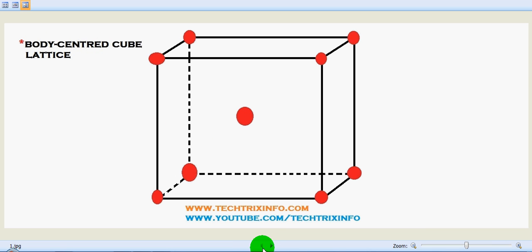So let's see what is a space lattice all about. Space lattice is actually a three dimensional geometrical arrangement of atoms or molecules or ions. It's three dimensionally arranged.